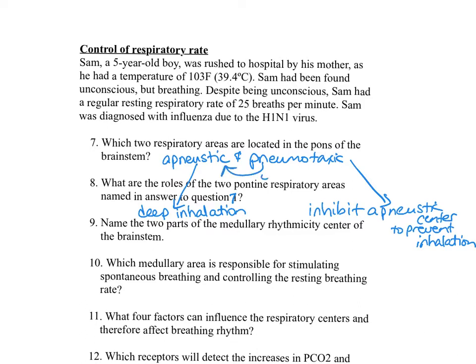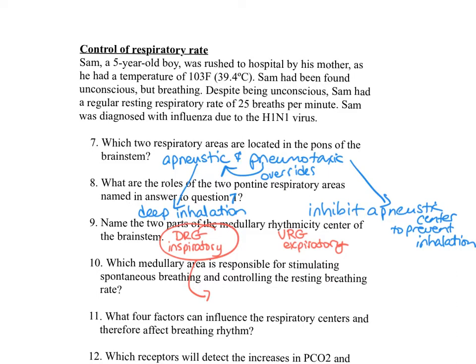Number nine: name the two parts of the medullary rhythmicity center of the brainstem. The two parts are the inspiratory area, called the dorsal respiratory group, and the expiratory area, called the ventral respiratory group. Number ten: which medullary area is responsible for stimulating spontaneous breathing and controlling the resting breathing rate? The inspiratory area — the dorsal respiratory group — stimulates spontaneous ventilation and controls the resting breathing rate.